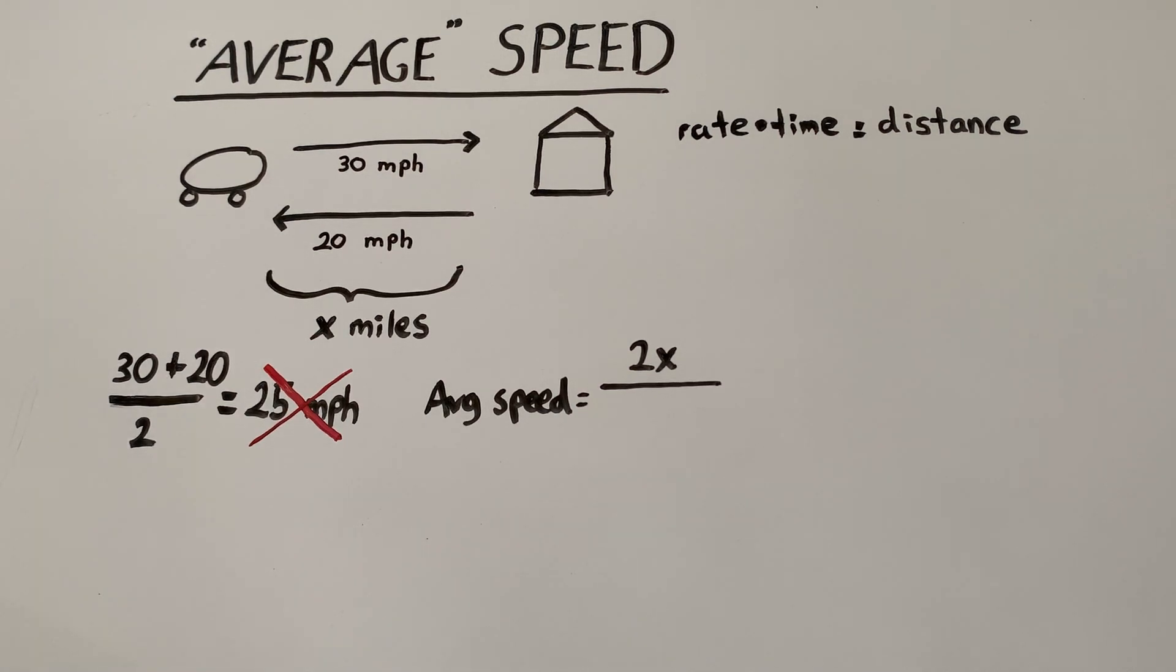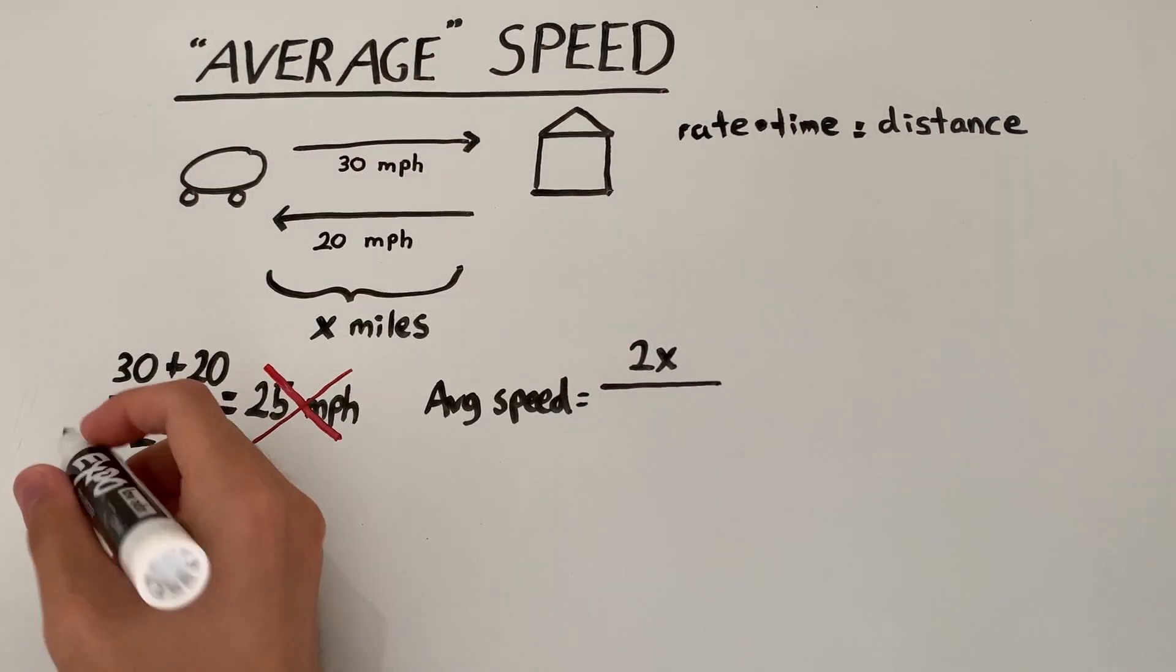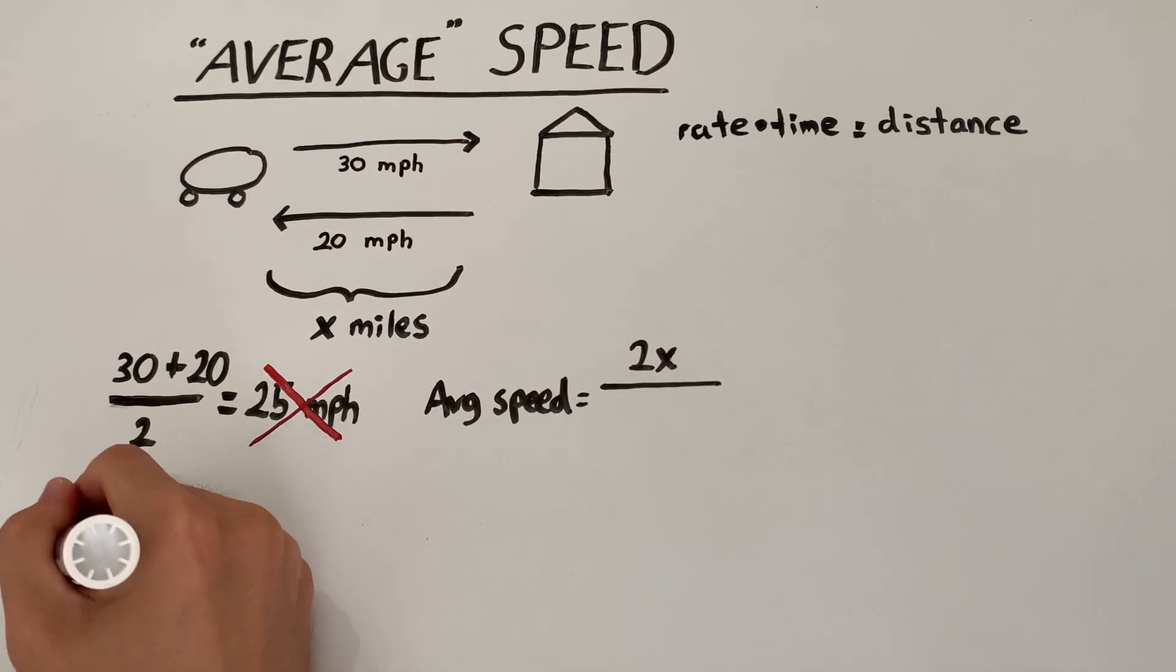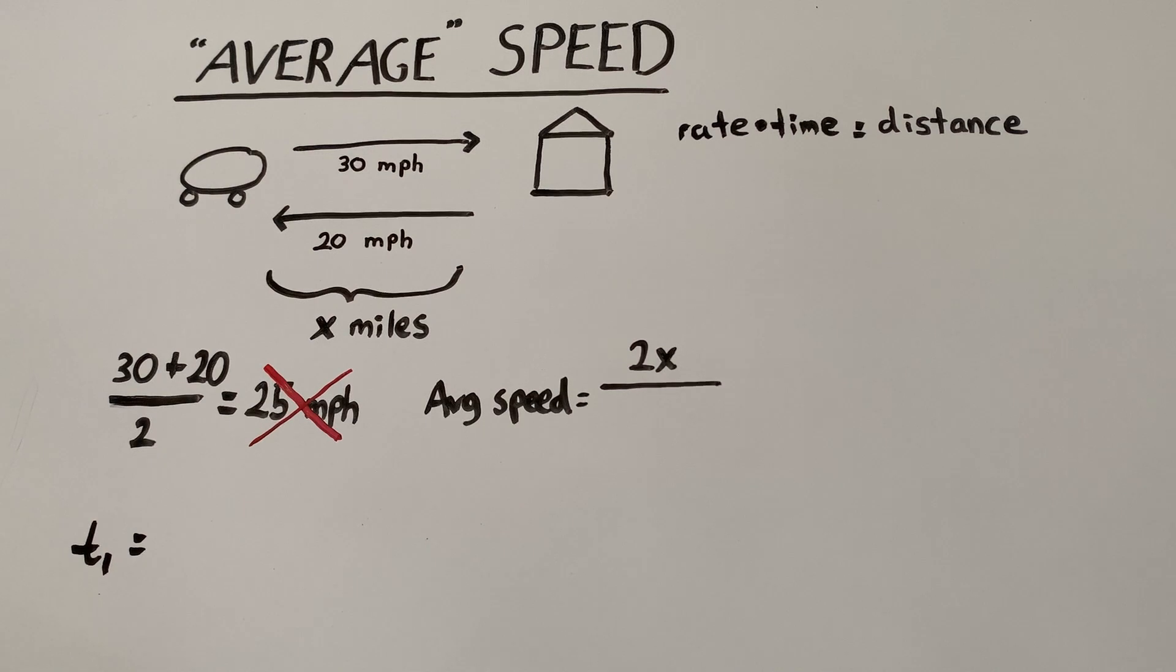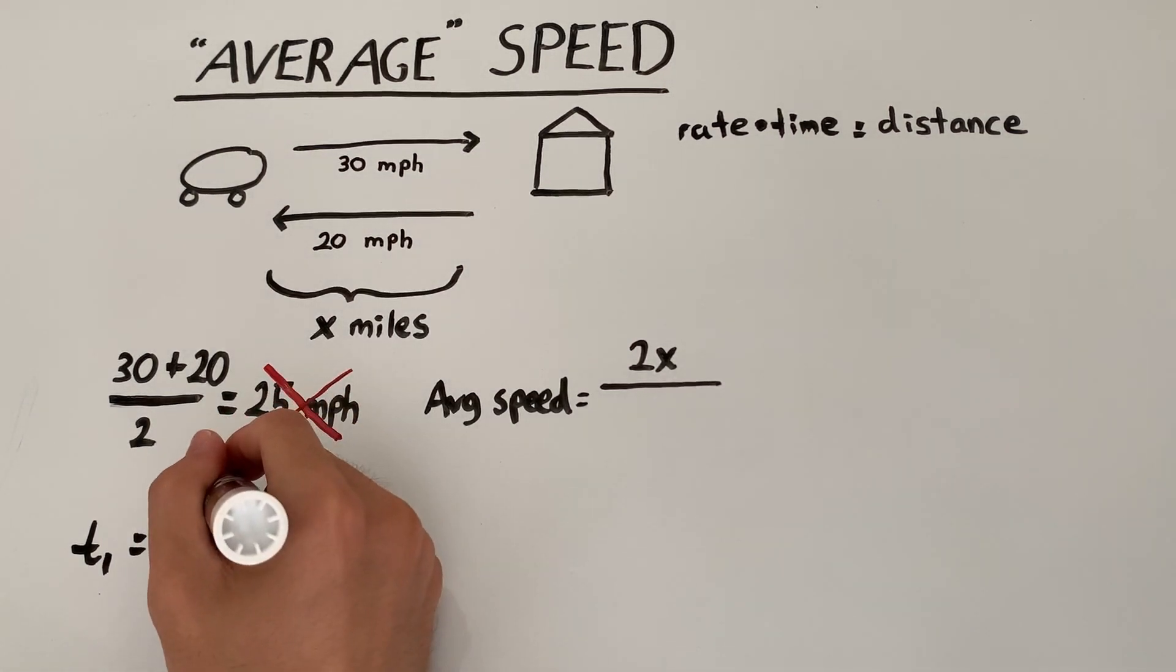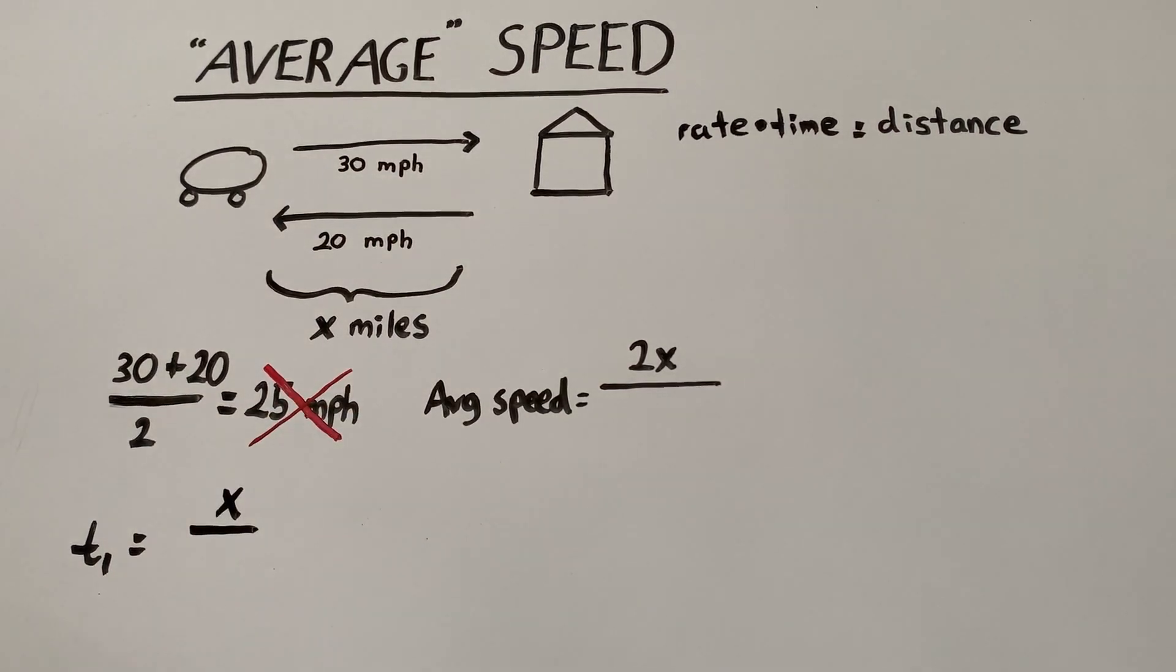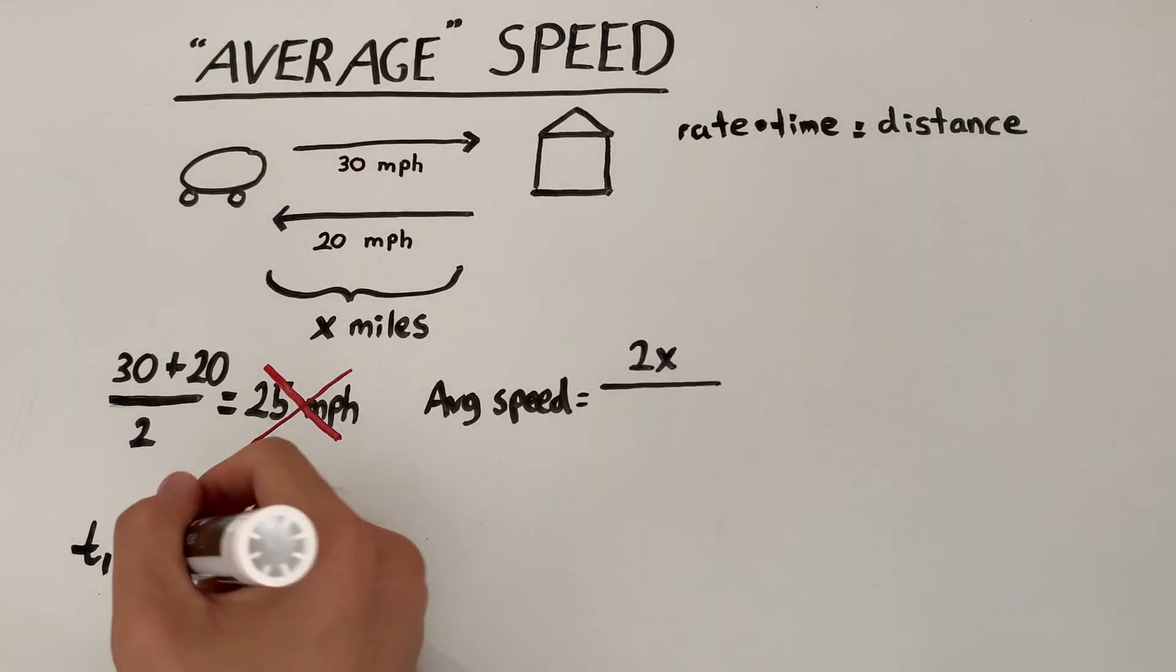So first, let's find the time it takes to get from my place to grandma's place. So let's call that T1. That would be the distance divided by the rate. The distance we defined as x and the rate is just 30 miles per hour.